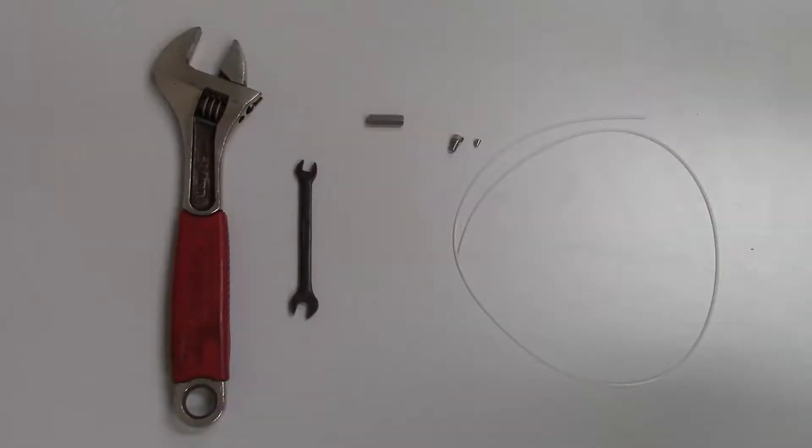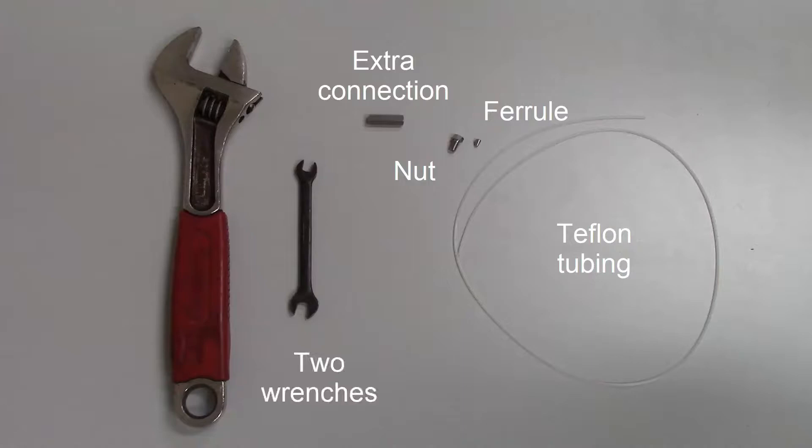The tools required for this procedure include a stainless steel nut, a stainless steel ferrule, a piece of 1/16th inch Teflon tubing, an extra connection piece to seat the fitting (in this case it's a union, but you can use other pieces including a column), and two wrenches.